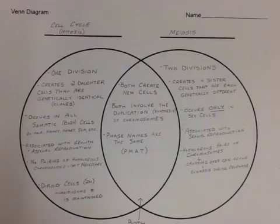At the end, mitosis provides us with diploid cells. What does that mean? It means we have cells that are genetically identical to each other and that maintain the 2N chromosome number. For example, human beings have 46 chromosomes, and when a mitotic division occurs, we end up with two cells each with 46 chromosomes.